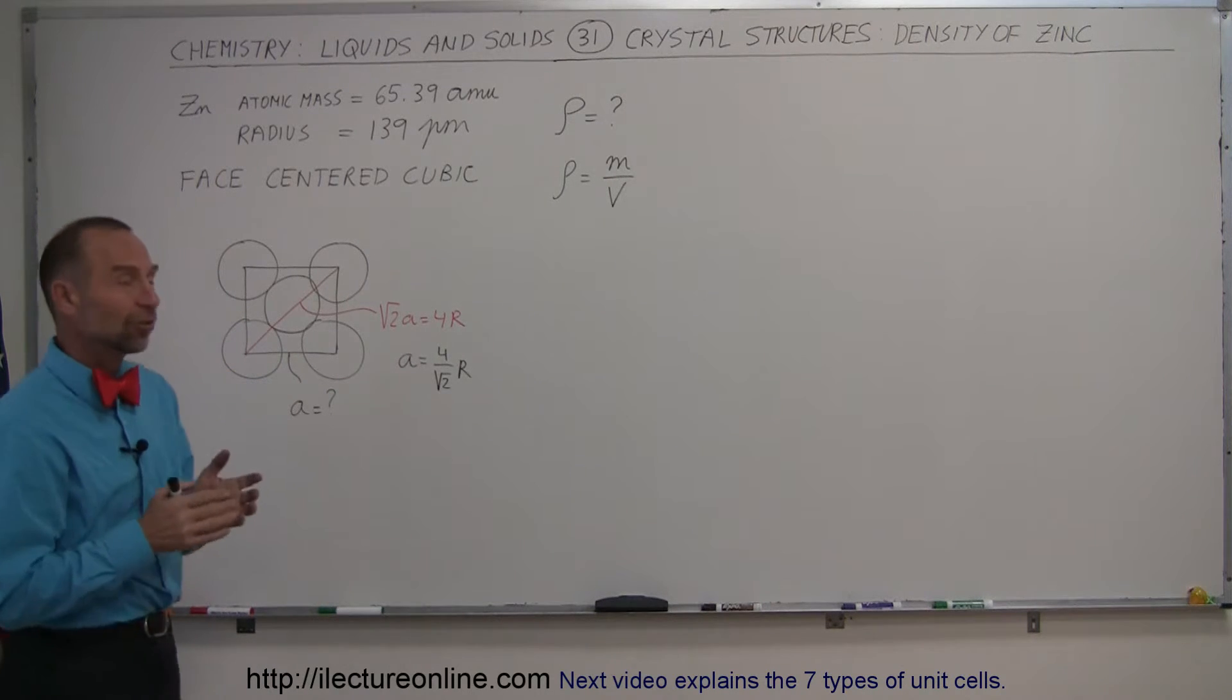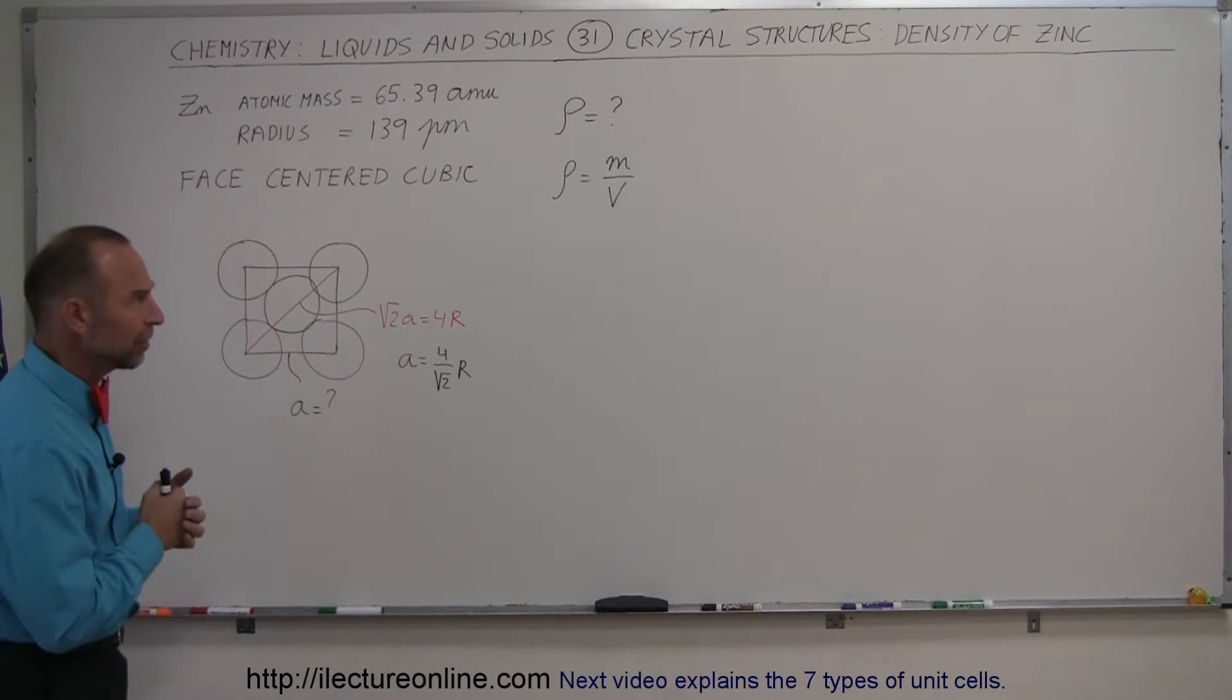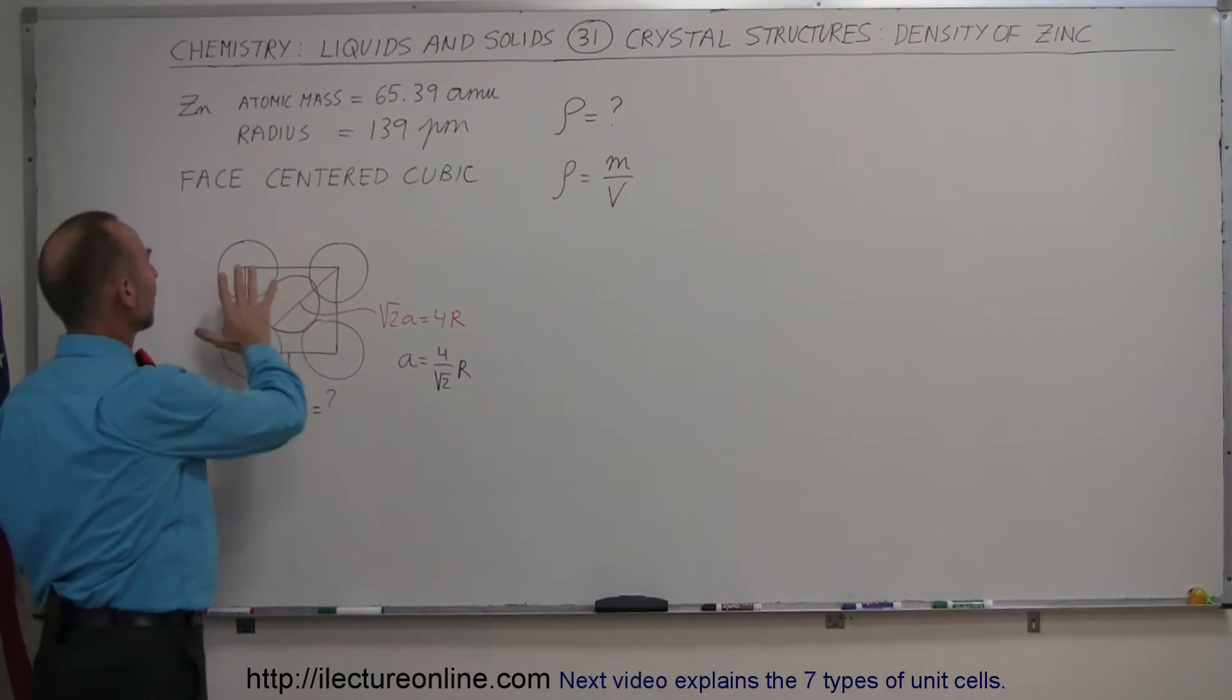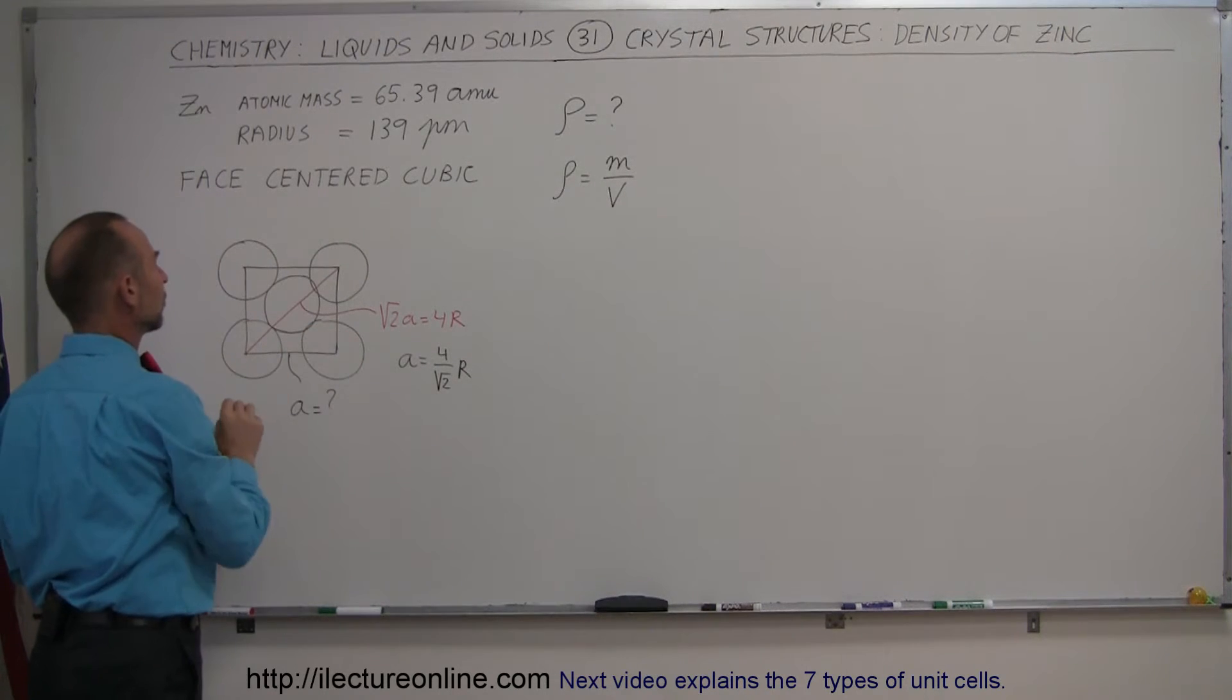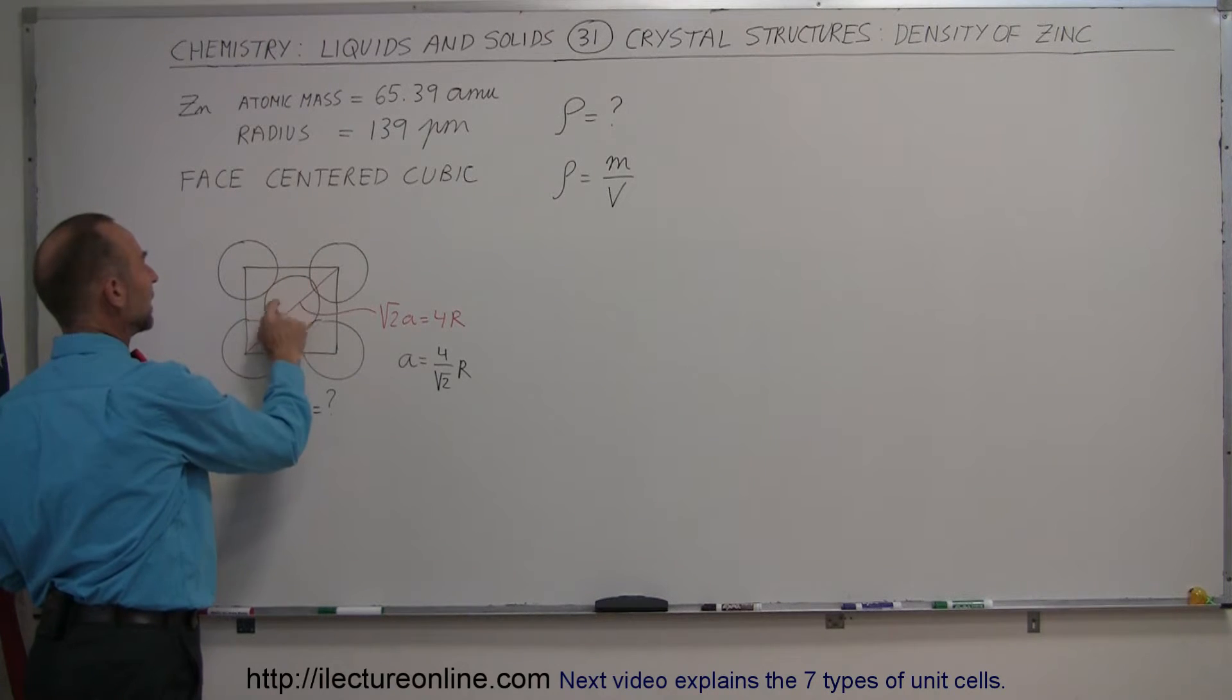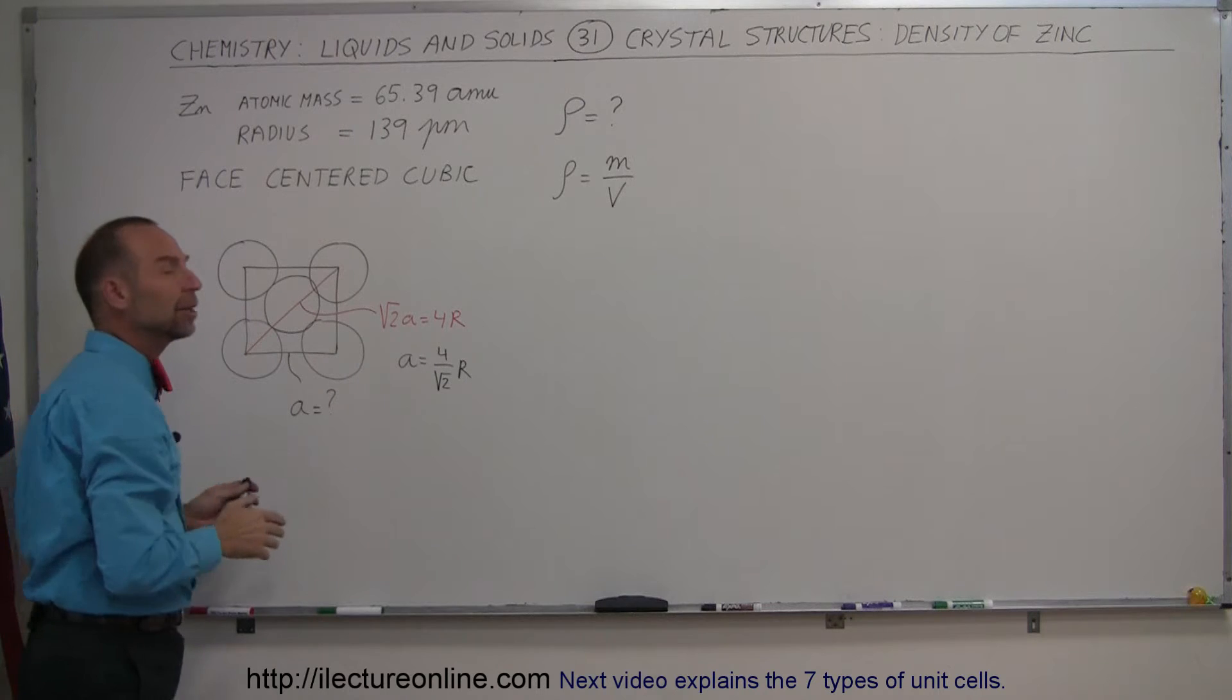Just like many other atoms of similar nature, zinc is packed in what we call face-centered cubic, which means that we have atoms at each of the corners of a unit cell, and then we have one atom in the middle of the face of each of the six sides of the cube.